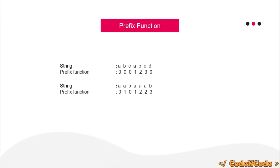You can read more about the prefix function on cp-algorithms.com — I'll post the link in the description since I'm following that site as a reference throughout this course. For example, the suffix 'aa' matches the prefix 'aa', so the pi value at that index is 2. And the suffix 'aab' matches the prefix 'aab', so pi at that index equals 3.